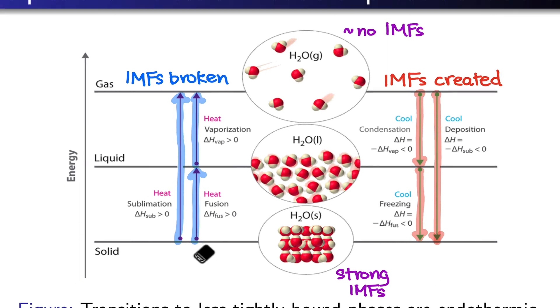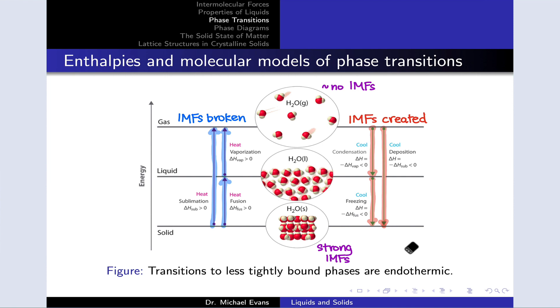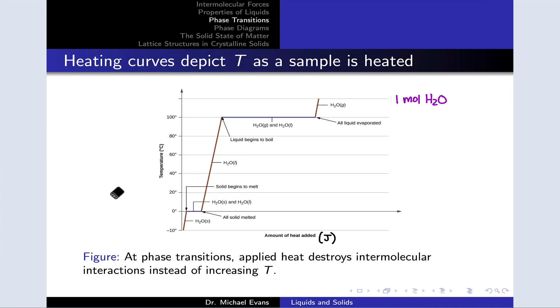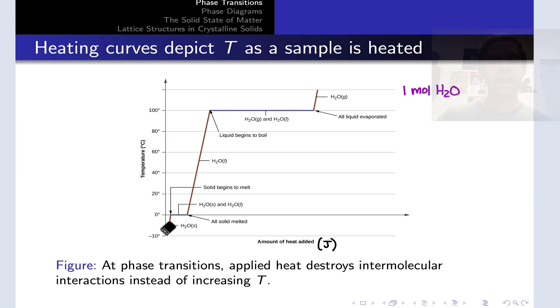So this shows you how endothermic and exothermic phase transitions relate to whether intermolecular forces are broken or created. A heating curve shows how the temperature of a substance changes as we apply heat to it at a constant rate. So what you should be visualizing when you see a heating curve is that we're moving along the x-axis at a constant rate as heat is added to the sample.